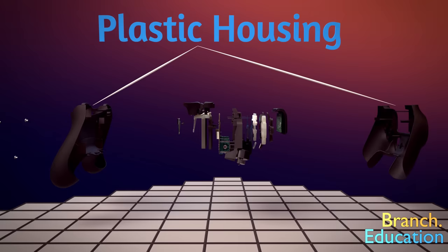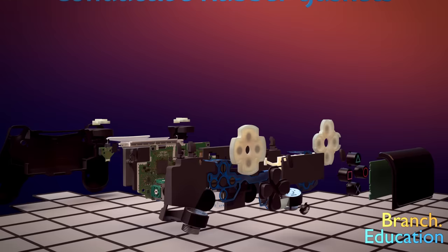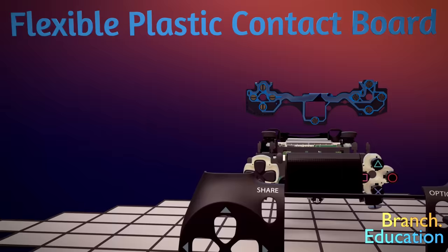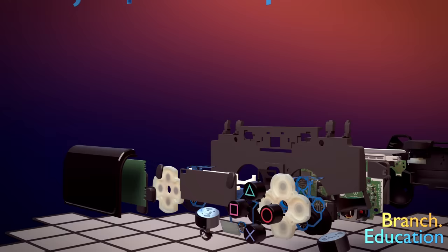After removing a few screws, we can take off the plastic outer housing and see all the components inside. On top is the D-pad, the triggers, and several other buttons. Below each button are conductive rubber button gaskets, and below that is the flexible plastic contact board that the conductive rubber presses against. At the center of the controller is a touchpad along with a small speaker.